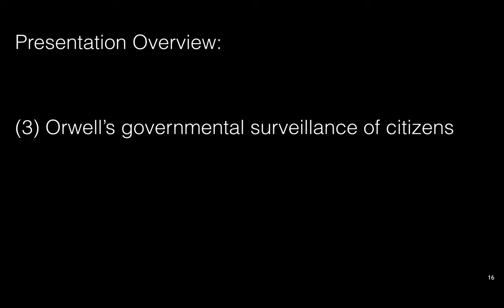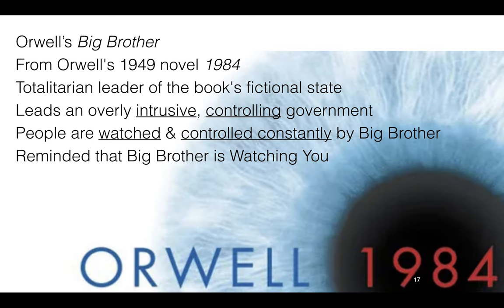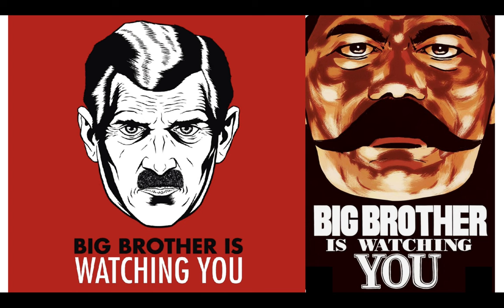One important application of these ideas is in George Orwell's governmental surveillance of citizens. In his iconic 1949 novel 1984, the totalitarian leader of the fictional state is 'Big Brother' — representing an overly intrusive, controlling government where people are constantly watched and controlled, and continually reminded that Big Brother is watching them. Here are two posters referencing the book — very Hitler-esque and Stalin-esque — both quite frightening.